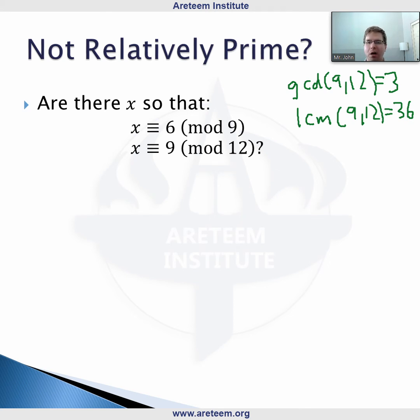We can still try to use our same method from before. Let's look at 9 mod 12. Our candidates are 9, then add 12, we get 21. Does that work? Is either of those 6 mod 9? No. Add 12 again, we get 33. Is 33 six mod 9? It's 27 + 6, so it does work.